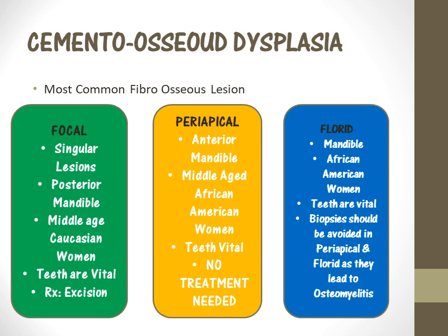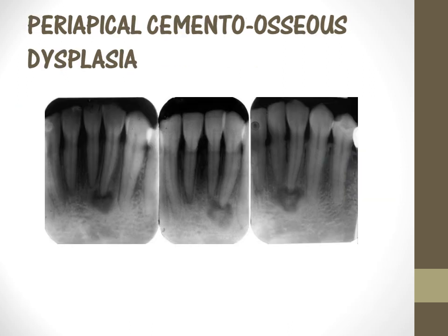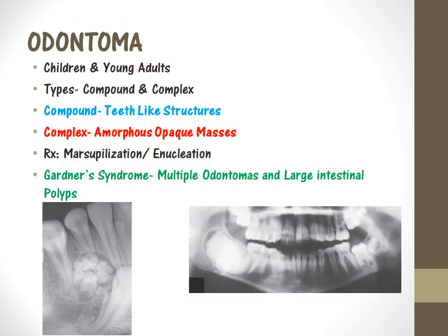The florid type also affects the mandible and African American women, and teeth are vital. Biopsies must be avoided in both periapical and florid types because biopsy leads to osteomyelitis. A radiograph example of periapical cemento-osseous dysplasia is commonly shown in exams — it is not a periapical lesion. When given a radiograph, identify it as periapical cemento-osseous dysplasia because there is no caries and the teeth are vital, and the treatment plan is no treatment needed.